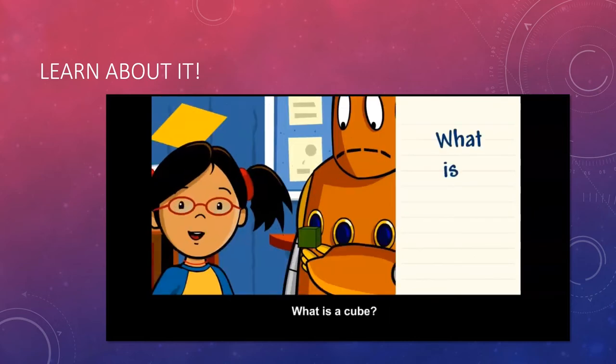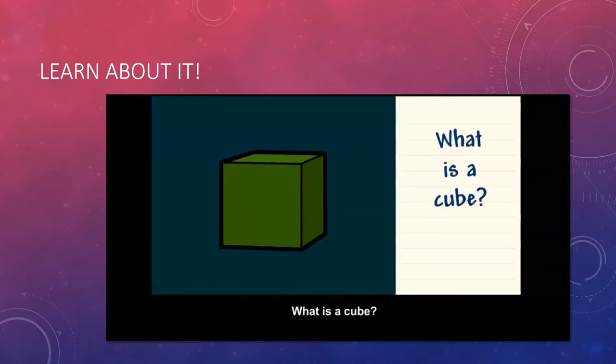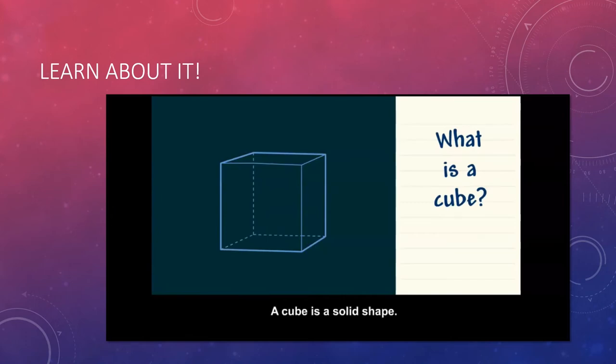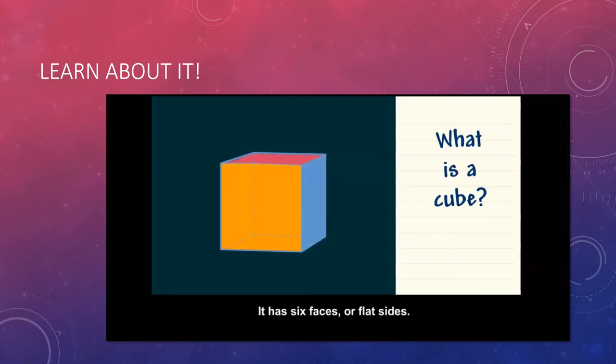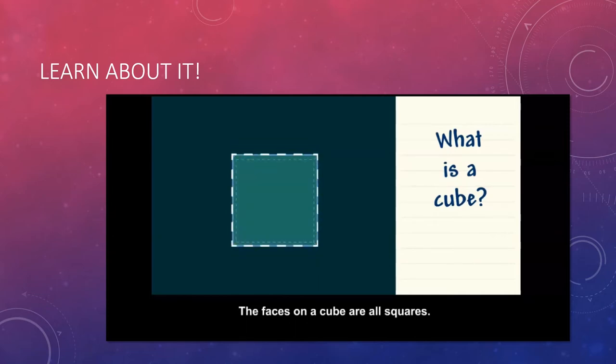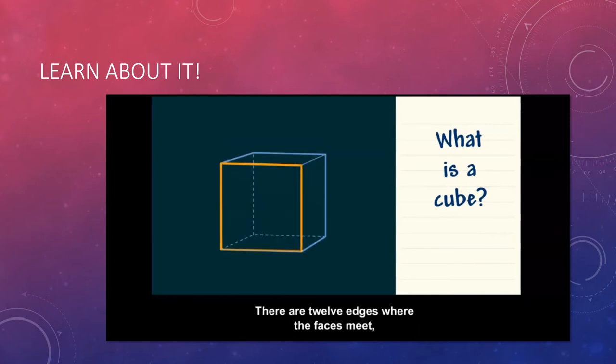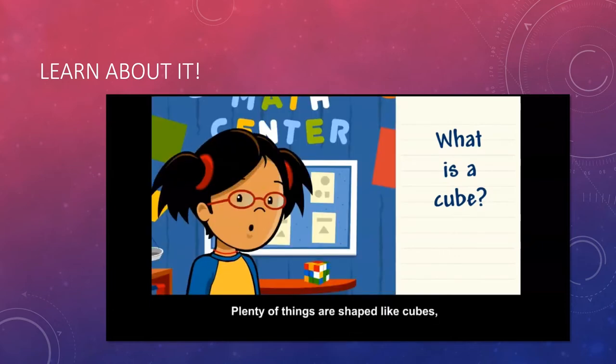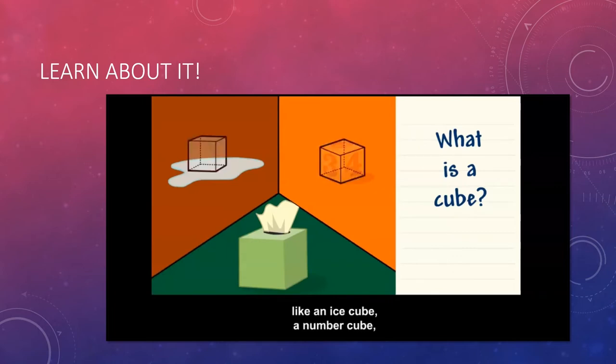What is a cube? A cube is a solid shape. It has six faces or flat sides. The faces on a cube are all squares. There are 12 edges where the faces meet and there are eight vertices or corners.